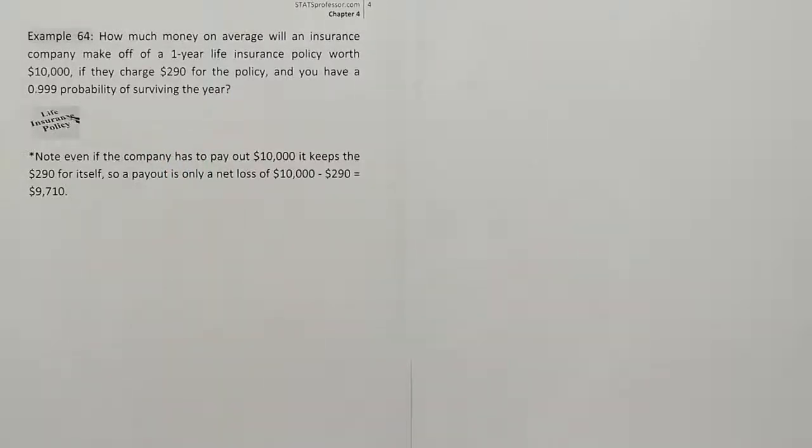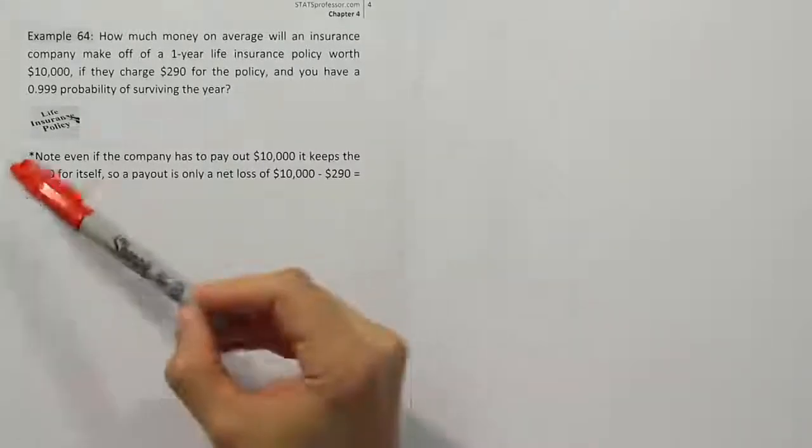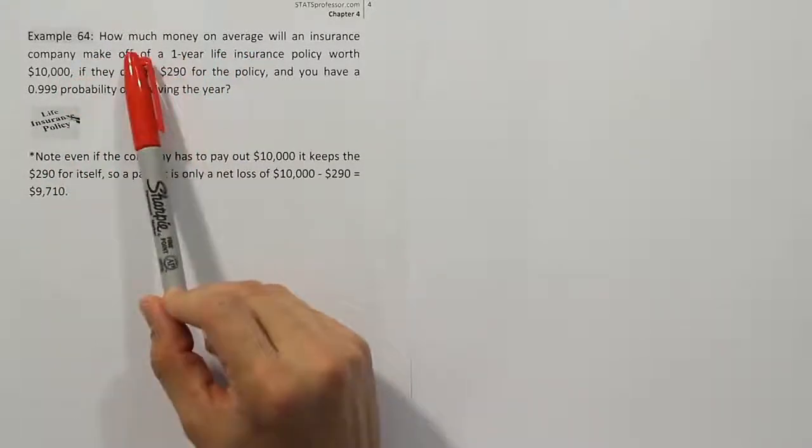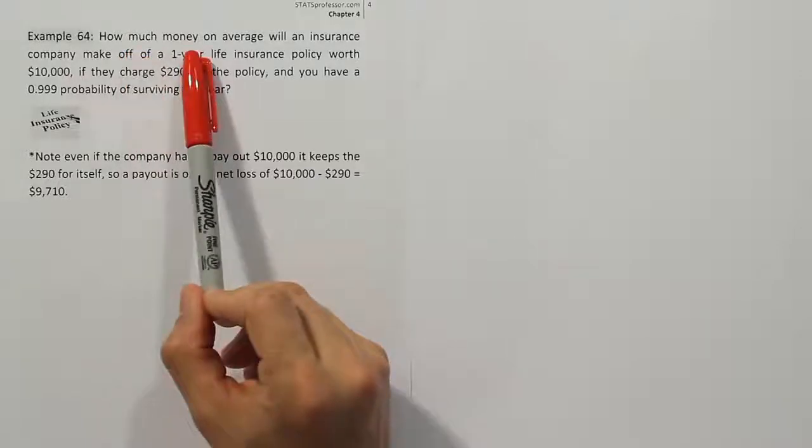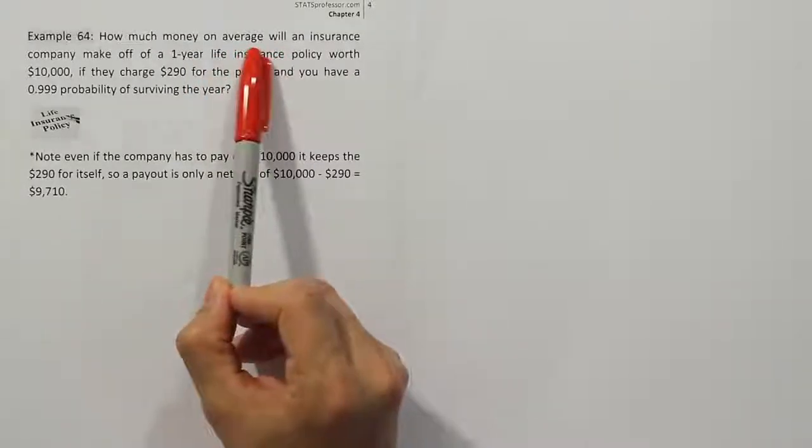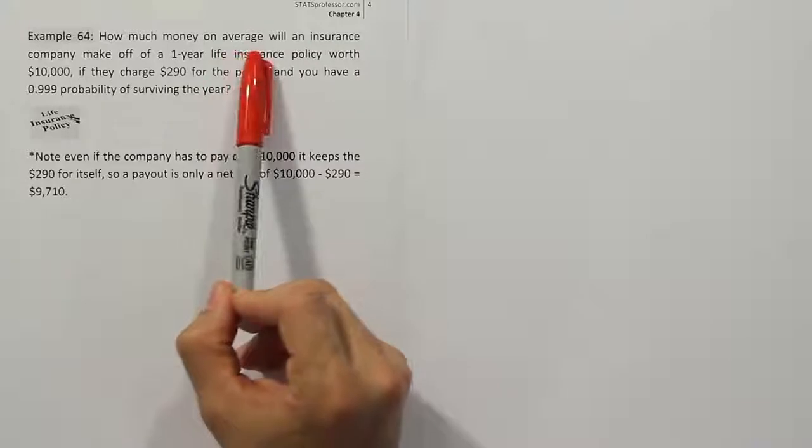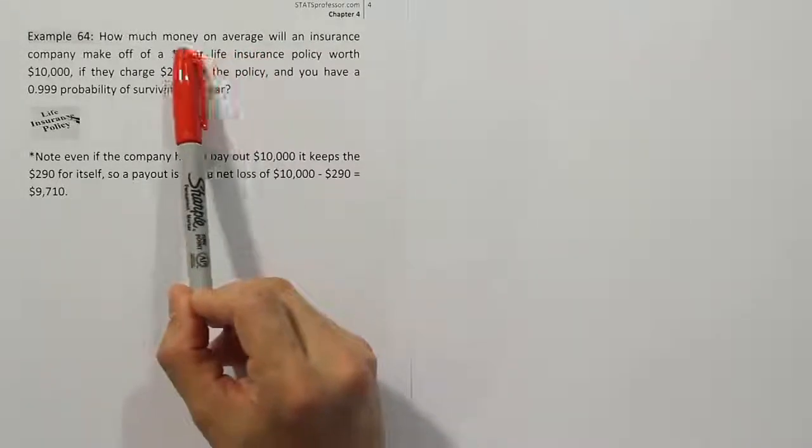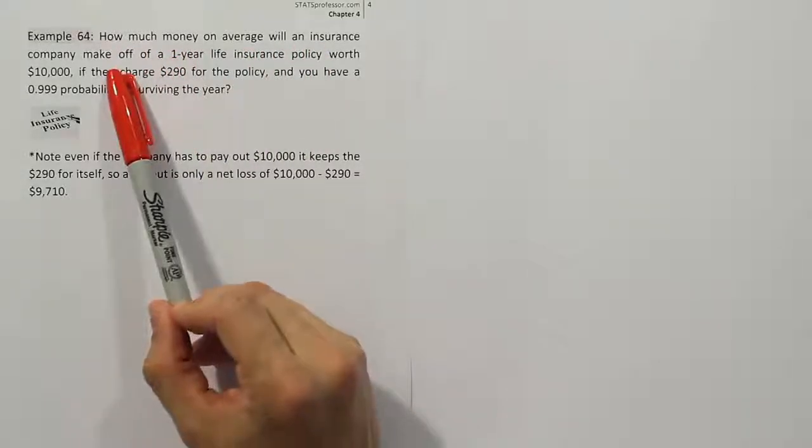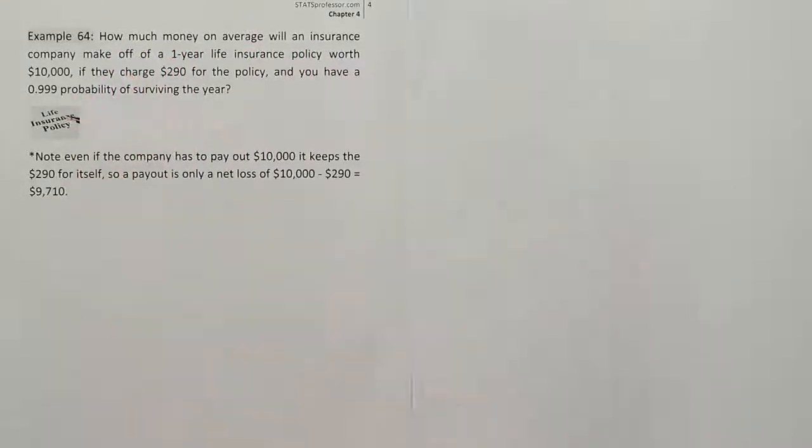Okay, so when you read this problem, the first thing you want to do is try to figure out what technique is involved. I think it's pretty clear that this is an expected value problem because it says how much money on average will a company make. The word expected means basically what you expect to happen, and that's what happens on average or what typically happens. Many times expected value problems involve money situations, so this is a clear cut case that this is an expected value problem.